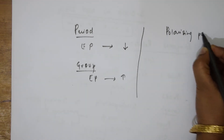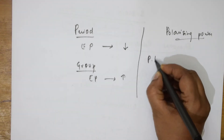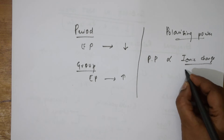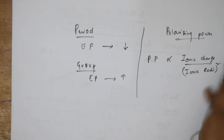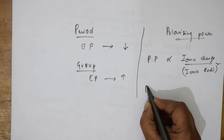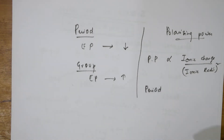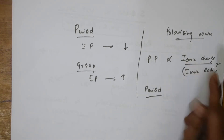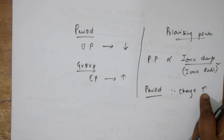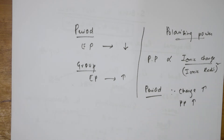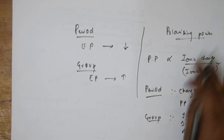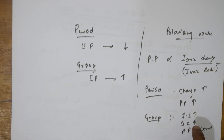In terms of polarizing power: polarizing power is directly related to ionic charge and inversely related to ionic radius squared. In a period, from left to right, charge increases, so polarizing power also increases. In a group, ionic size increases and ionic charge also increases, so polarizing power remains almost constant because both are increasing at the same rate. This is the first important concept to remember when studying S-block elements.